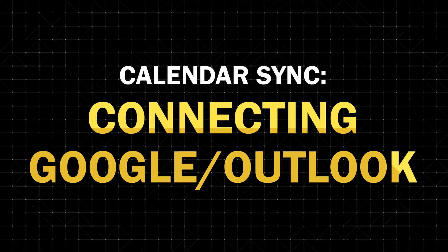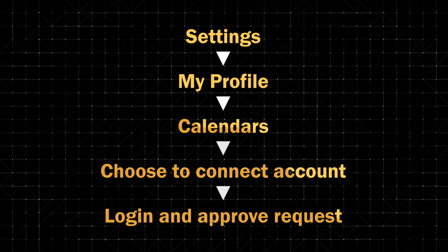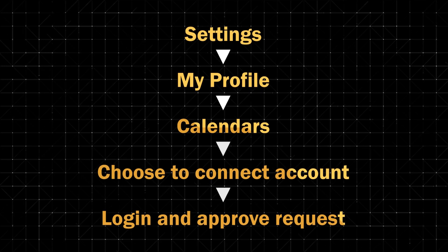Calendar sync — connecting Google or Outlook. If you already use Google Calendar or Outlook to keep track of your day, GoHighLevel can connect with that so you're not getting double booked. Go to Settings > My Profile > Calendars, choose to connect your Google, Outlook, or iCloud calendar, log in and approve access. GoHighLevel can read your existing events and automatically block off times you're already busy. You can turn on two-way sync so that when someone books through GoHighLevel, it shows up in your Google Calendar automatically. Each team member can connect their own calendar to keep the system accurate.